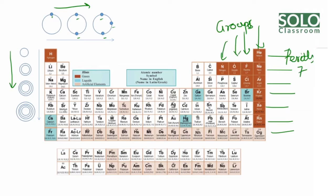In the periodic table, atoms are organized into periods and groups. If you look at the periods, each period corresponds to a shell number. Period 1 has 1 shell, period 2 has 2 shells, up to period 7 which has 7 shells. The period number tells you the number of shells in the atom.